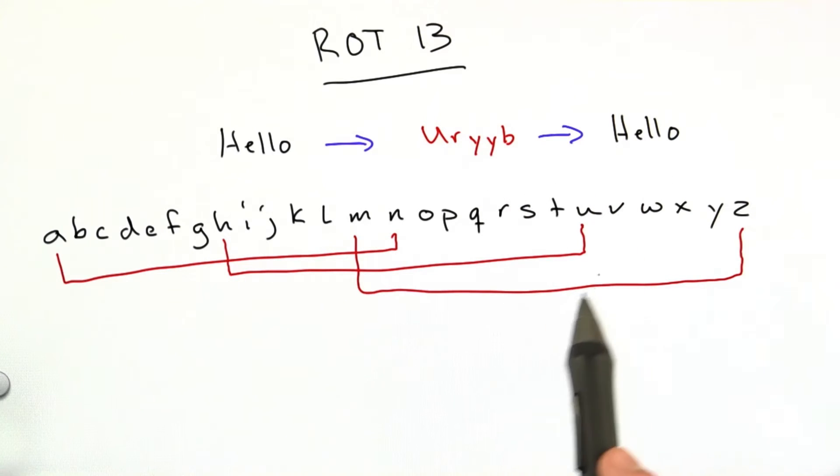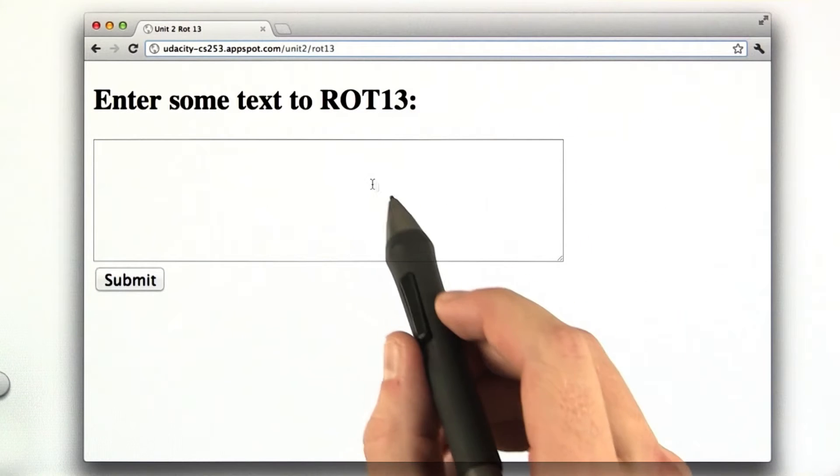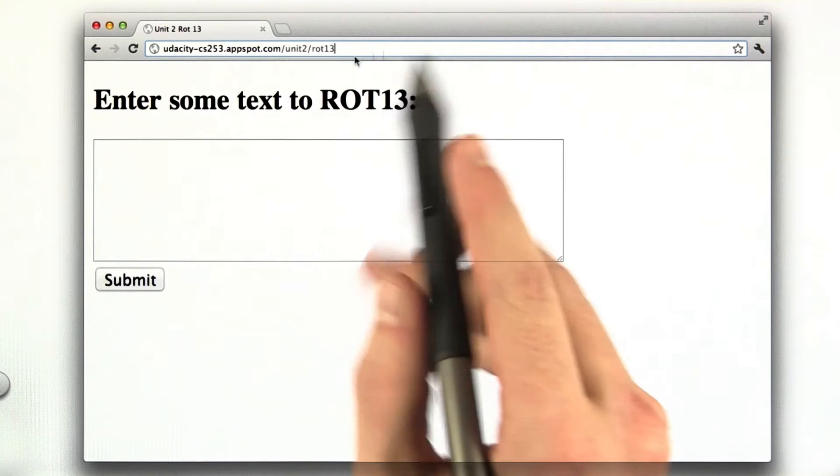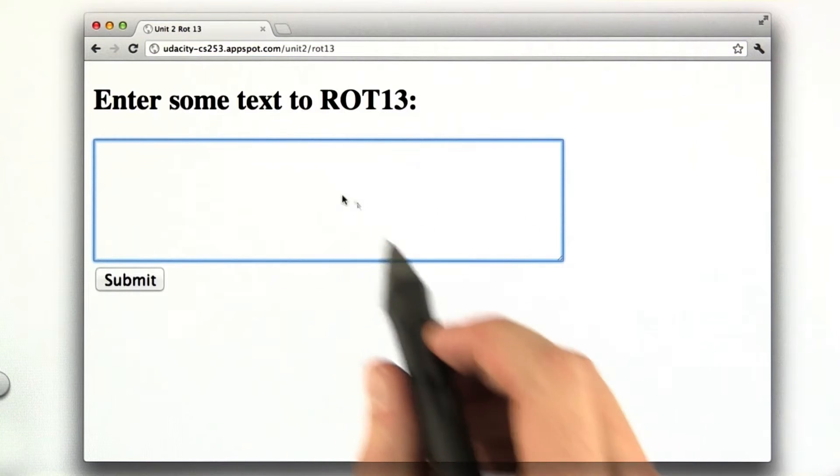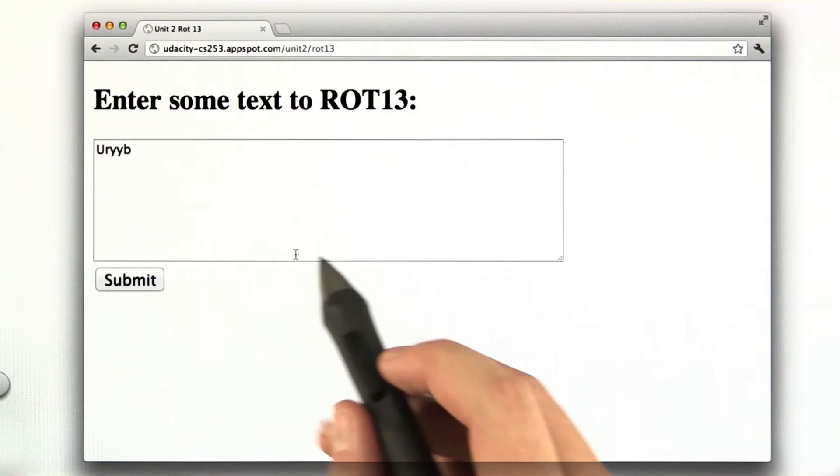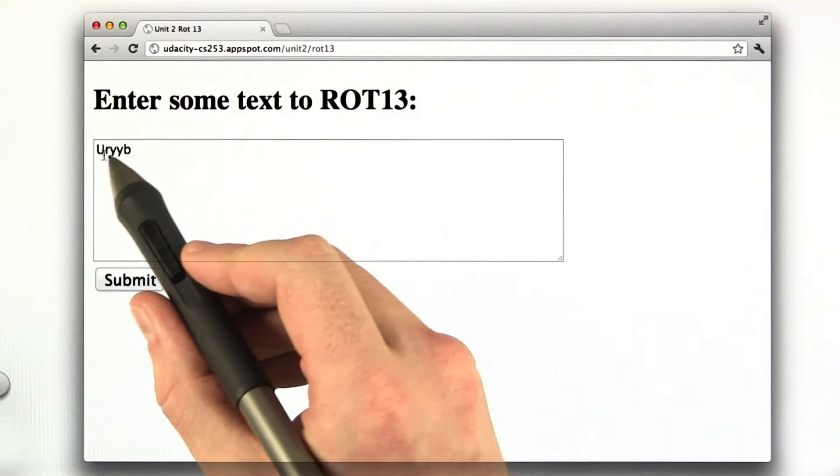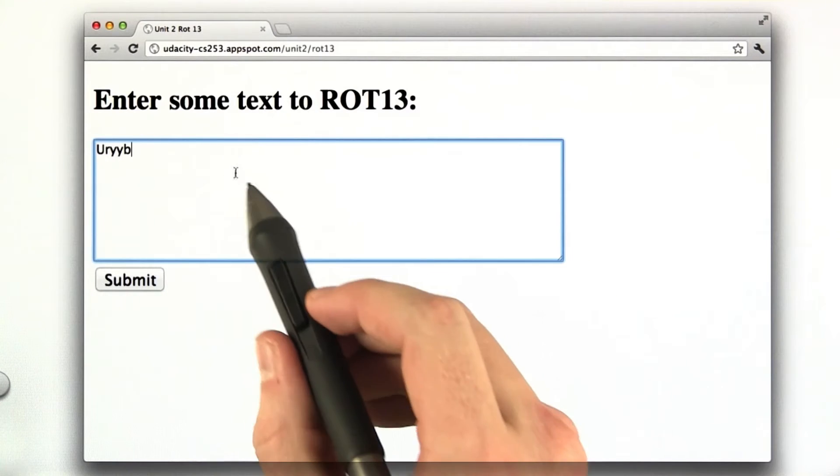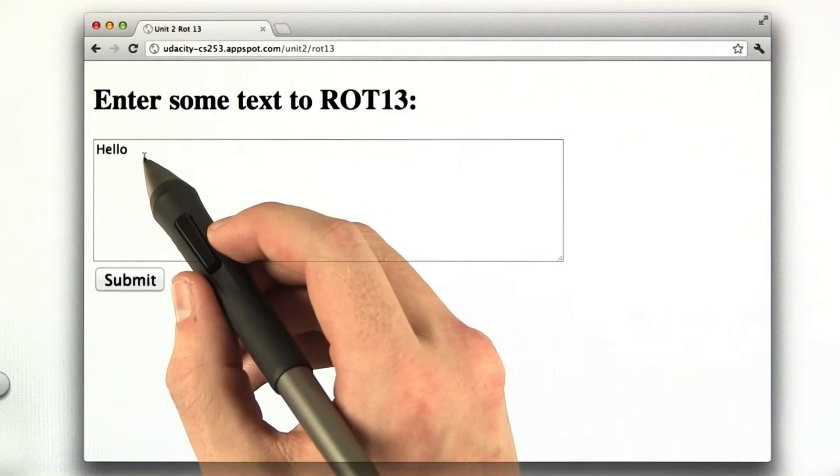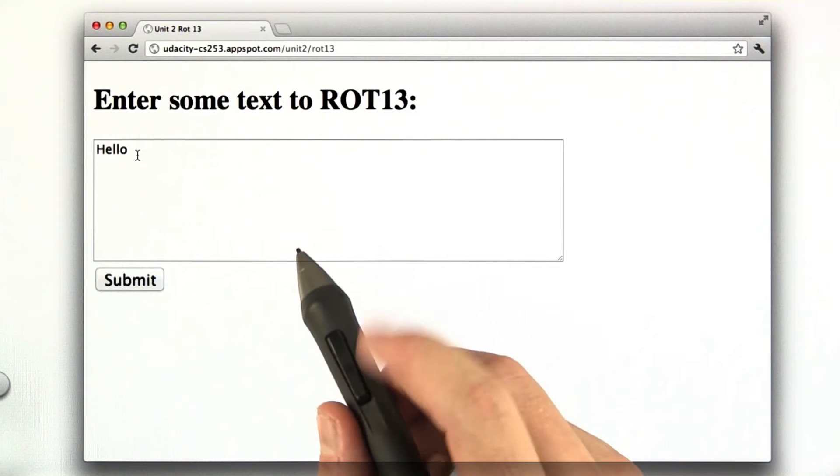Let me show you what this should look like when it's all working. Okay, so here is the app running on my AppSpot account at slash unit2 slash rot13. And if I type some text in this field and click submit, it re-renders this form with my text in the text box. And if I were to hit submit again, it converts it back to hello. Okay, this is what I'd like you to build.